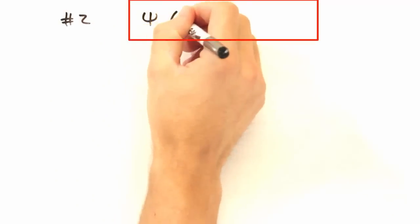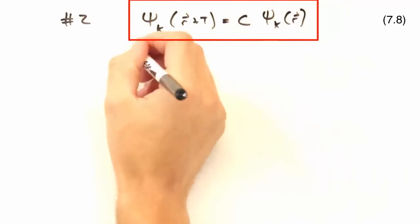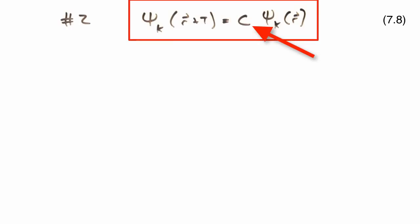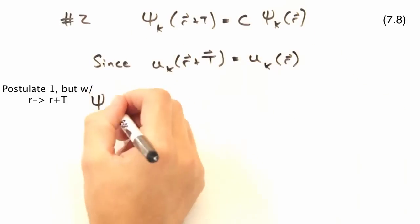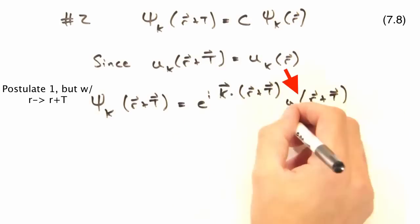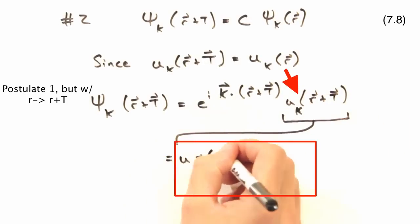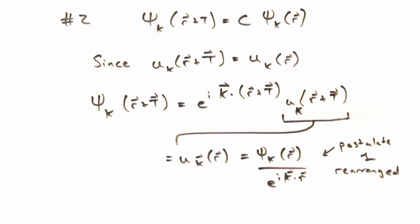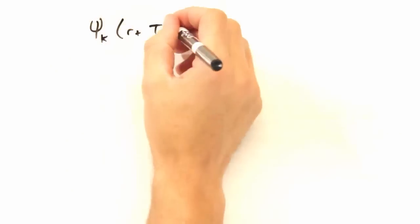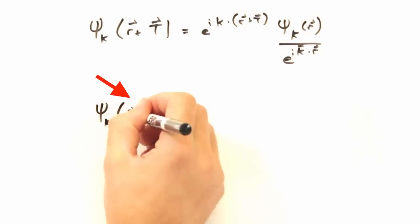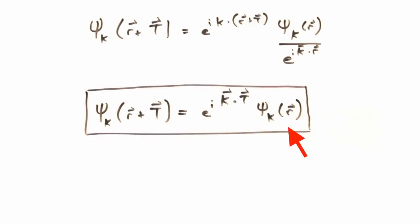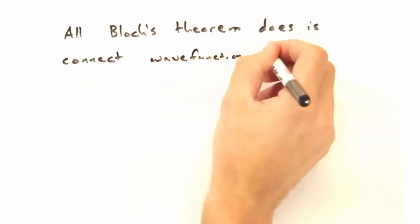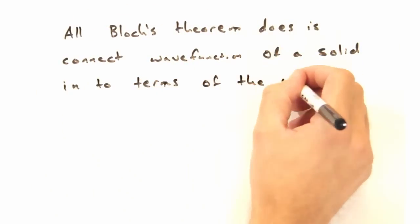The second postulate of Bloch's Theorem states that psi of r plus t will have the same form as psi of r, just with a modulation term. And since u of r plus t equals u of r, we can rewrite this as our original psi of r e to the minus i k dot r. Since the exponentials with the r cancel out, we're left with the shifted wave function as a function of our original psi times this other term that depends on the translational symmetry vector of the lattice. So really, all Bloch's Theorem does is connect the wave function of solid into terms of the underlying translational symmetry.